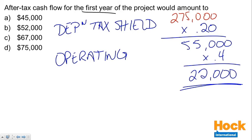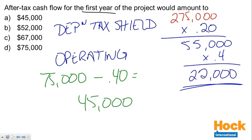We also have our operating activities. There's $75,000 coming in from operations, but we're going to have to pay taxes on that. So we multiply $75,000 by 60%, and we get $45,000 as our after-tax cash flow from operations. Combined with the $22,000 cash inflow from the tax depreciation shield, that gives us a $67,000 after-tax cash flow for the first year of the project — from the tax depreciation shield and the increase in operating activities.